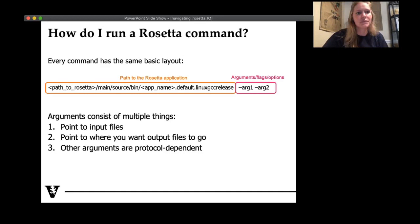How do I run a Rosetta command? Every command has the same basic layout. You're going to point to Rosetta, which is defined on your local workstation. And then within Rosetta, you're going to go main/source/bin, and then the application name. And then followed by this path, you're going to have different arguments. FYI, we also call these flags or options. But general computer nomenclature, these are arguments. And these arguments can be multiple things. This can be where you're telling Rosetta to look for an input file, whether that's an input structure file or a sequence. You can also point to where you want to dump your output files. And then other arguments that are protocol dependent.